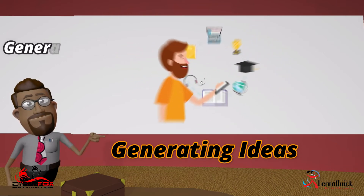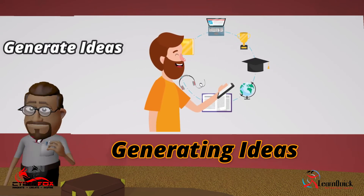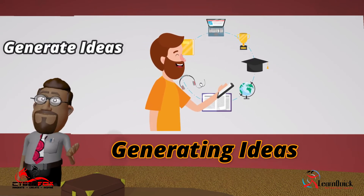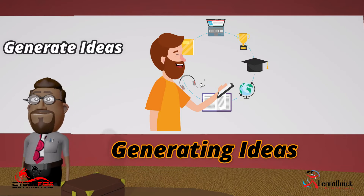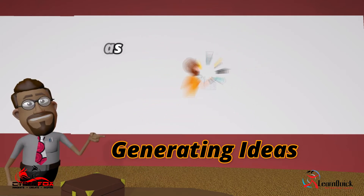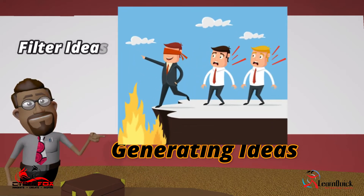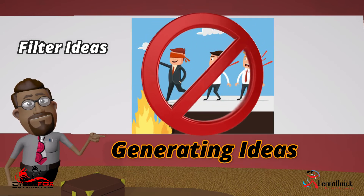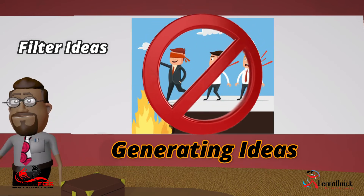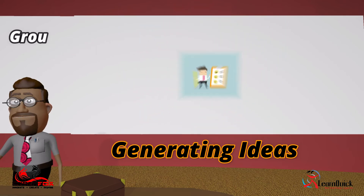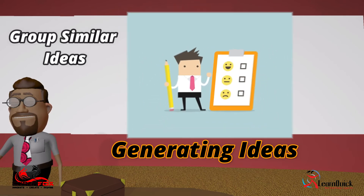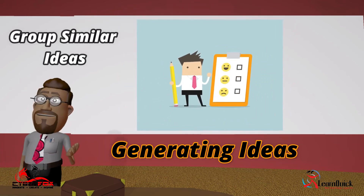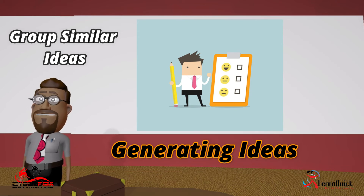The second step is to generate ideas — think of ways and methods you can follow to achieve the end you have set. The third step is where you filter your ideas from the list you made and remove the impractical ones. In the fourth step, you group similar ideas together based on characteristics. If some ideas are left with no groups, you can get rid of them.